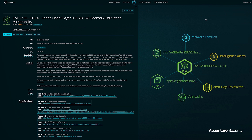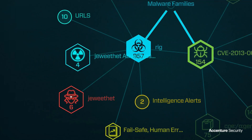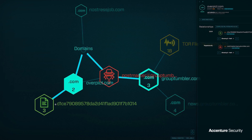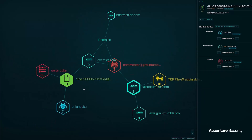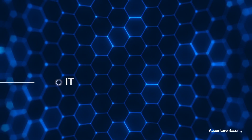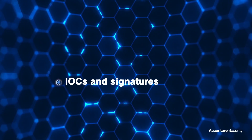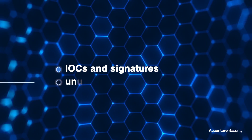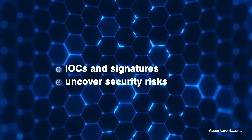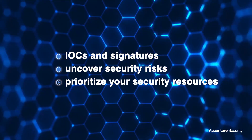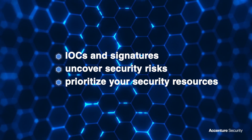Through the use of iDefense Intel Graph, you can easily find information and visualize connections among alerts, malware families, and threat campaigns. With iDefense Intel Graph, you can find IOCs and signatures to leverage for detection and mitigation activities, uncover potential previously unknown security risks, and prioritize your security resources more effectively.